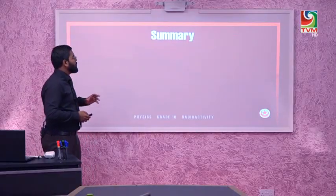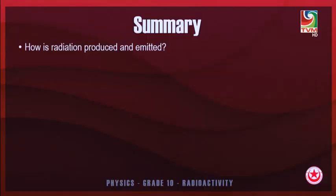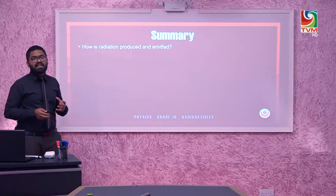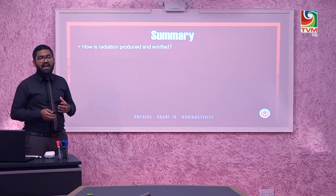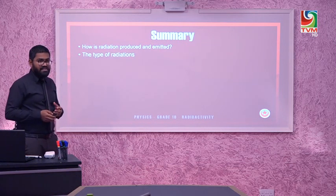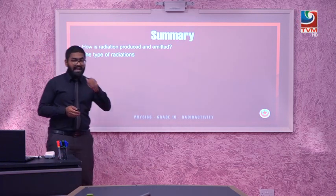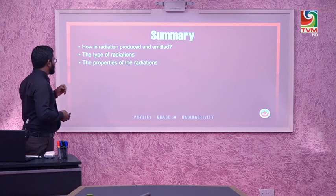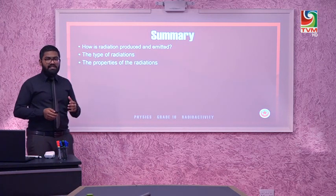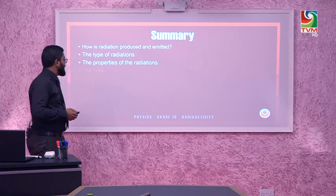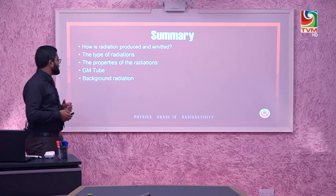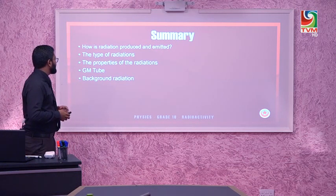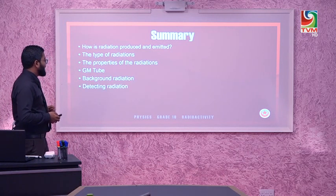To summarize today's lesson: radiation is produced from an unstable nucleus — in order to become stable, the atom undergoes radioactivity and emits radiation. Three types of radiation are emitted: alpha, beta, and gamma. We studied their properties in terms of ionization and penetrating power, how a GM tube works, and the identification and nature of background radiation.